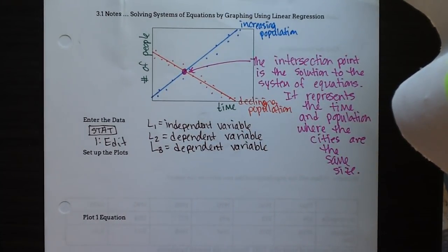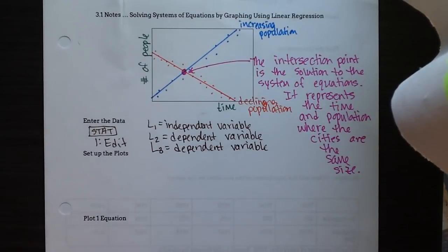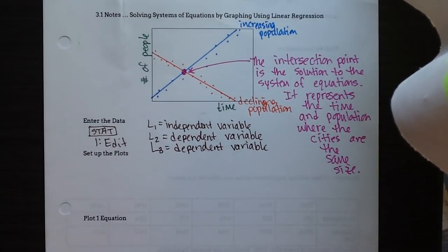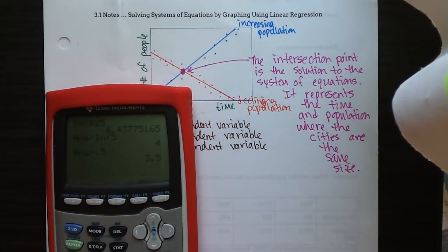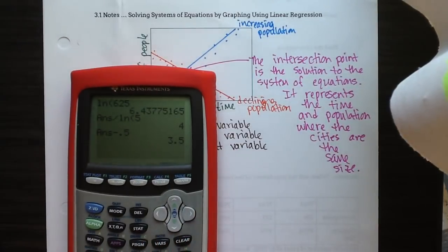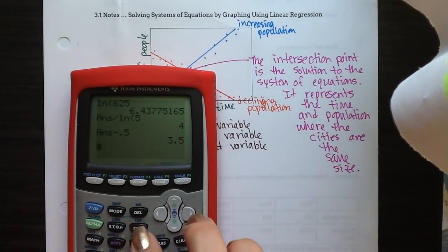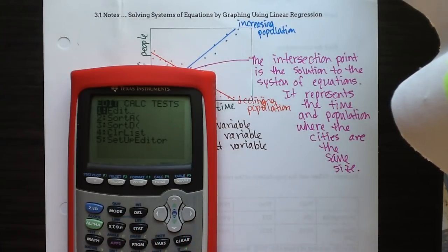Having data in L2 and L3 allows us to have more than one scatter plot on our graph at the same time — that will be something new to you. To get our plots set up, we go to STAT PLOT. Let's go ahead and get that data entered. I'm going to put it on my calculator. I'll go to STAT, then Edit.